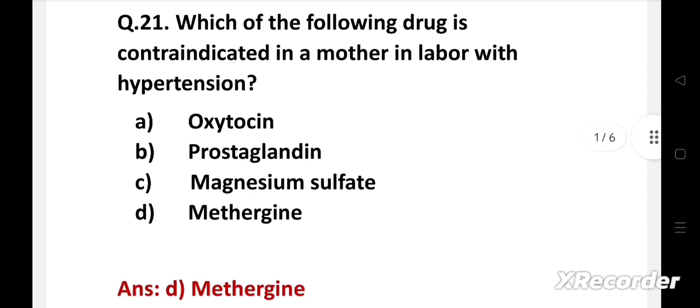Right answer is option D, Methergine. Methergine is used for the prevention and control of postpartum hemorrhage. Methergine is contraindicated in high blood pressure and in pregnancy, so it is contraindicated in a mother in labor with hypertension.